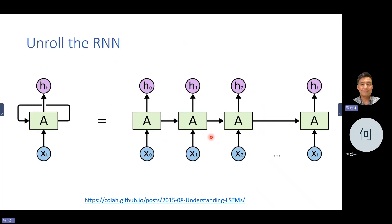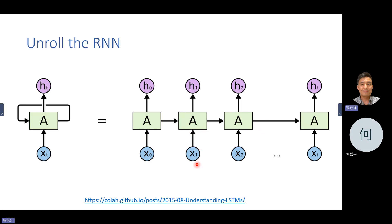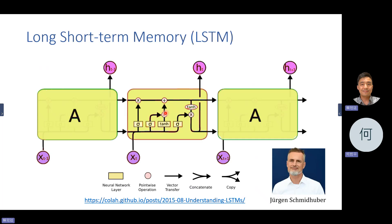RNN is good for time series data. You only have one cell, but you can expand it on the time domain. For input at time zero, you get output H0, which is passed to the next stage. The neuron memorizes H0 and passes it to the next stage along with X1 to generate H1. So RNN has memory and considers temporal dependencies — good for time series data like stock prices or weather.